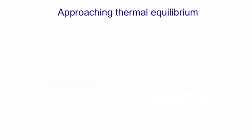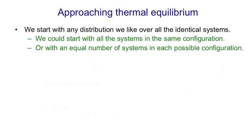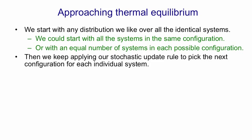Now we can understand what's happening as we approach thermal equilibrium. We can start with any distribution we like over all these identical systems. We could make them all be in the same configuration, so that's a distribution with a probability of one on one configuration and zero on everything else, or we could start them off with an equal number of systems in each possible configuration, so that's a uniform distribution.